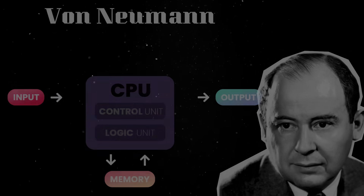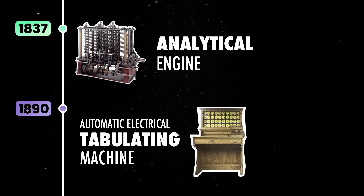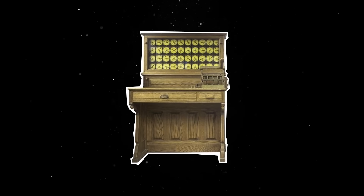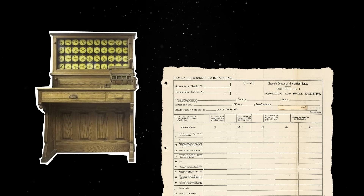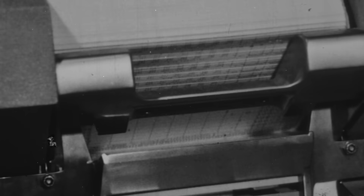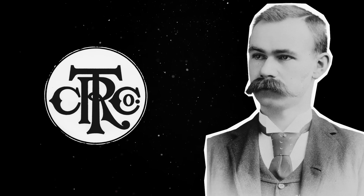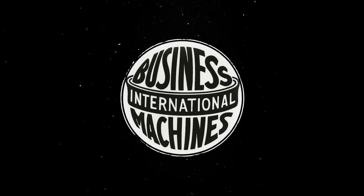One of the most significant developments in mechanical computing came in 1890, when Hermann Hollerith created the automatic electrical tabulating machine. This device was designed to process data from the US Census, which had become an overwhelming task due to the country's rapidly growing population of over 62 million people. Using punched cards, the machine could sort, count, and process census data faster than ever before, reducing what would have been a 10-year manual process to just a few months. This breakthrough was so impactful that Hollerith would patent it and later found the Computing Tabulating Recording Company, a small startup which would evolve into the company we know today as the International Business Machines Corporation.